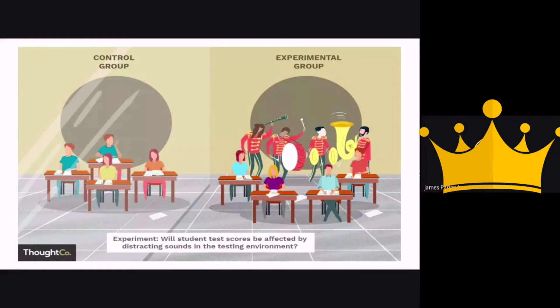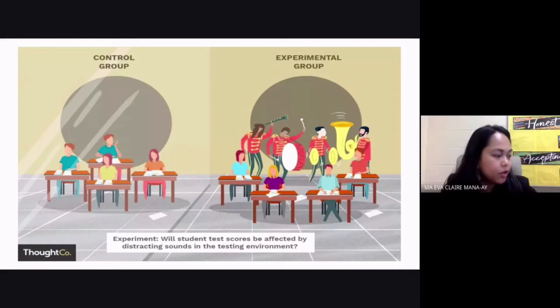The independent is the distracting noises and then the dependent is the test scores of the students. Okay, very good. That's correct.